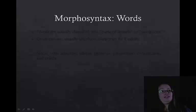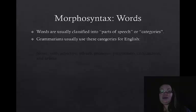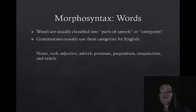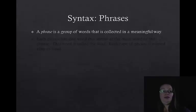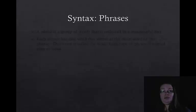Let's take a look at some words. Words are usually classified into parts of speech or categories. Grammarians use these categories for English: noun, verb, adjective, adverb, pronoun, preposition, conjunction, and article. We've gone now from roots and affixes — derivational and inflectional morphemes — to words, and now we're going to go to the larger level of phrases.